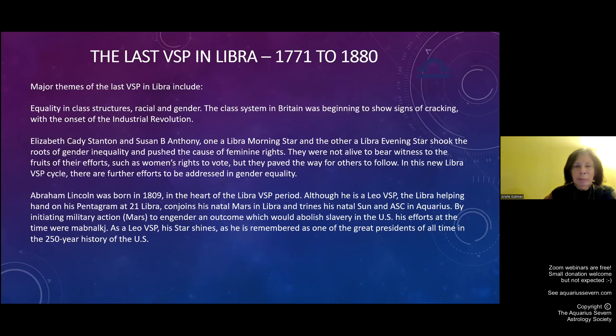Just going to say for now that this is another interesting phenomenon that I found. At certain times in history, three of the five points of the star are signs of Mars' rulership or exaltation, such as we've been living in, Aries, Scorpio, and Capricorn. At other times, three of the five points of the Venus star are signs of Venus' rulership, Libra, Taurus, Pisces. We are currently in the period of the Mars-dominated star, but soon we will be moving into the Venus-dominated star. Let's hope that Earth survives and all of us can bear witness to that and see what's coming, what's coming up for us. So that is my presentation on the Venus star.